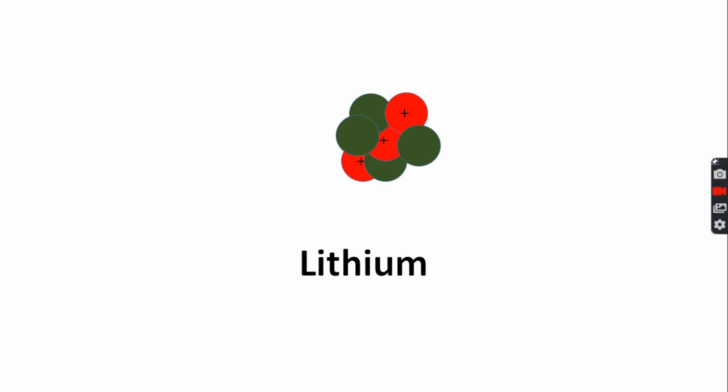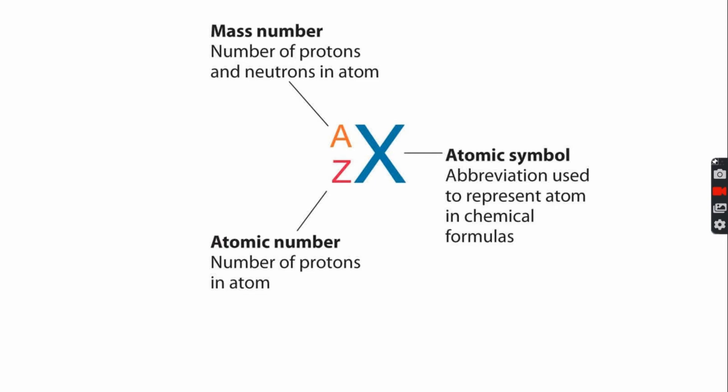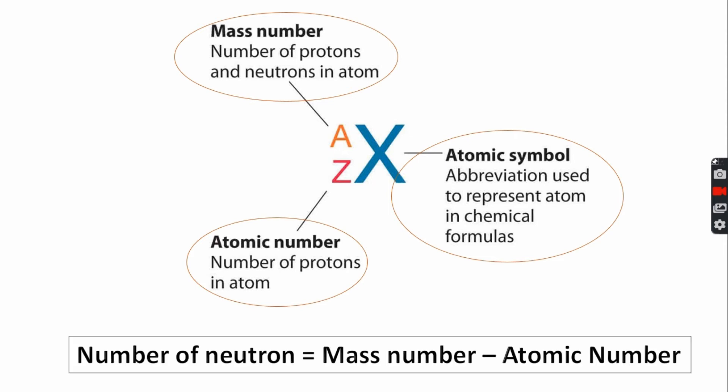When we represent an atom, we use nuclide symbol. This will consist of one or two letters that abbreviate the element. If one letter, it's capitalized. If two, the first is capitalized and the second is not. To the bottom left, we sometimes put the atomic number, which is the number of protons in the nucleus. To the upper left is the mass number. Remember that the mass number is the number of protons plus the number of neutrons, which means that the number of neutrons in an atom is the mass number minus the atomic number.